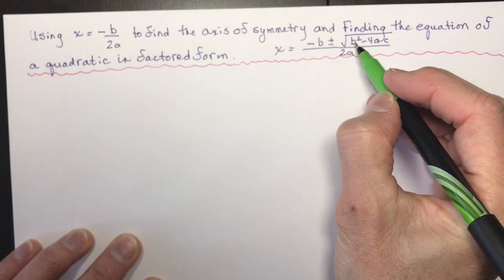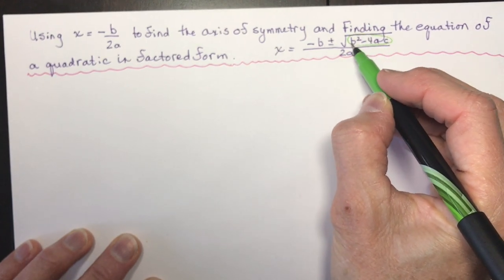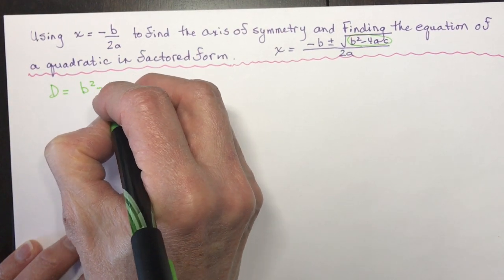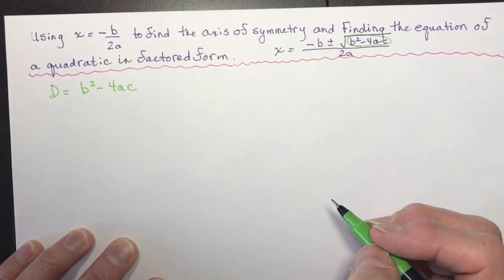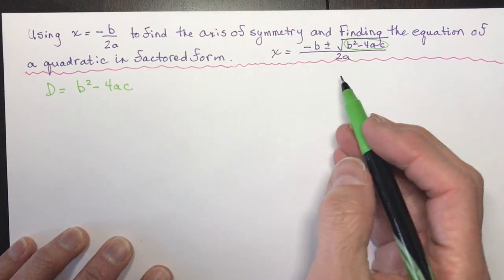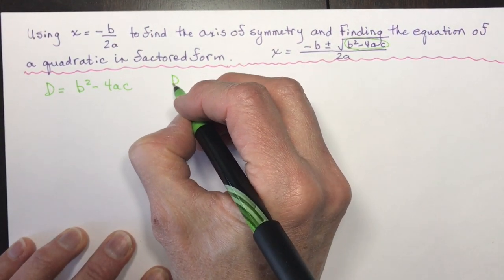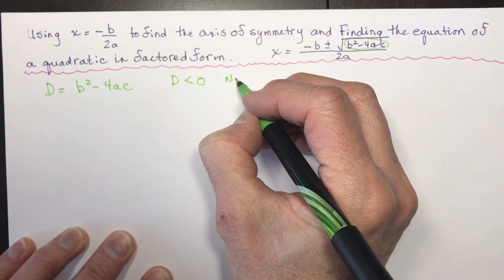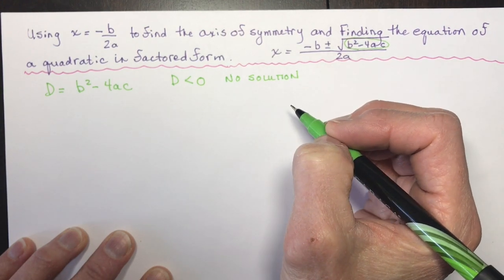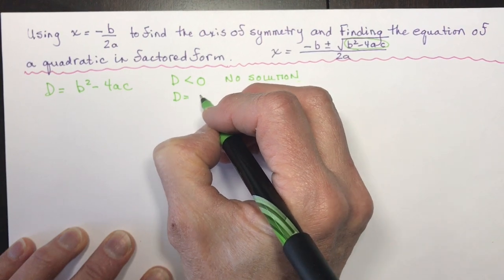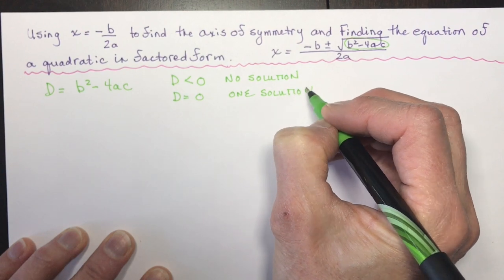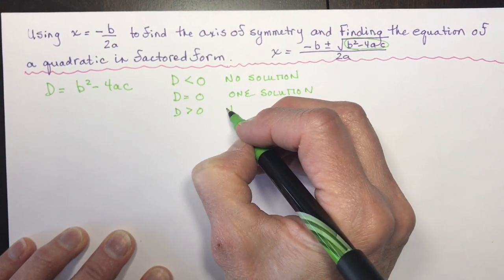The discriminant was hiding right here under this radical sign. D equals b squared minus 4ac. Don't take the radical sign with it — the discriminant is just this little piece. If d was less than 0, then you had no solutions — no x-intercepts, no zeros, no roots. If d was equal to 0, you had one solution. And if d is greater than 0, then you have two solutions.